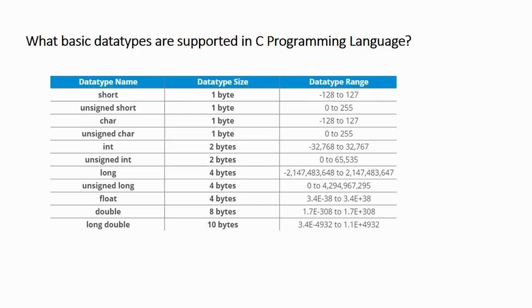Next, we have integer, which occupies 2 bytes and its range is from -32768 to +32767. It is used to store integer values within this range. Similarly, unsigned integer has the same size of 2 bytes, but since it is unsigned its range is from 0 to 65535.